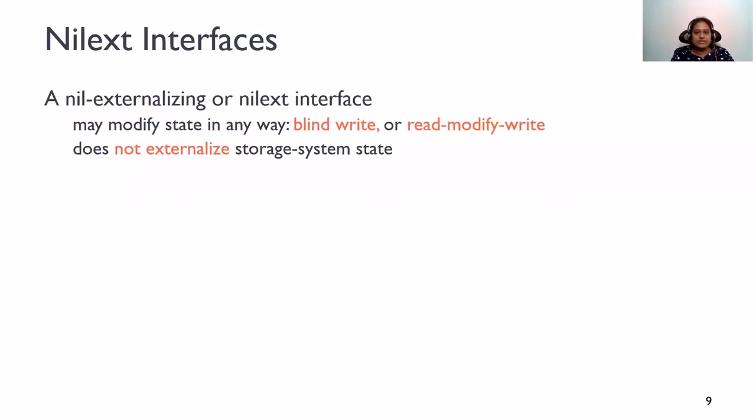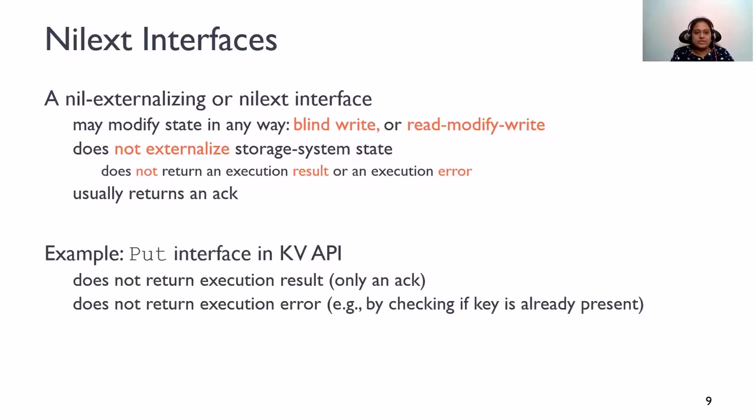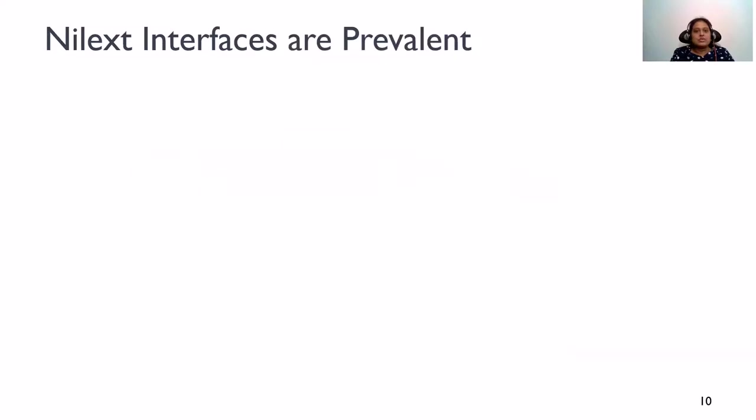As I mentioned earlier in the talk, a nilext interface may modify the storage system state in any way. The operation can be a blind overwrite or a read-modify-write. However, it does not externalize the system state by returning an execution result or an error. The interface can still return an acknowledgement indicating request completion. Put interface on the key-value API is an example of a nilext operation. Put returns only an ack and does not return any error, for example, by checking if the key is present.